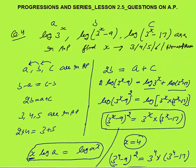Key takeaway: whenever three numbers are in AP, twice the middle term equals the first plus the third. Apply log properties and you get the answer. That was all about Progressions and Series lesson 2.5 — questions on AP. Thank you.